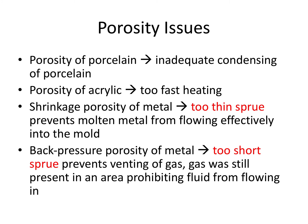Let's talk about porosity issues related to errors during lab processing, which are important for board questions. Porosity of porcelain is due to inadequate condensing of the porcelain. Porosity of acrylic, for dentures, is related to too-fast heating. Shrinkage porosity of the metal is due to the sprue being too thin, which prevents molten metal from flowing efficiently into the mold. Back pressure porosity of the metal is due to the sprue being too short, which prevents venting of gas, prohibiting fluid from flowing in. The shrinkage form is from the sprue being too thin; the back pressure form is from it being too short — easily confused, so remember the distinction.